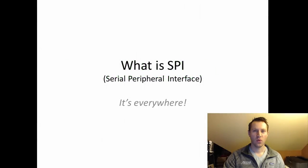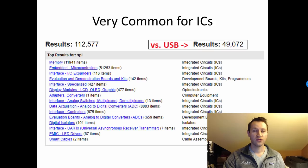Let's jump right in and talk about what is SPI. It stands for Serial Peripheral Interface, and it is everywhere. It's extremely common for ICs, or integrated circuits, meaning that a lot of dedicated chips that you might find on DigiKey on a circuit card interface via SPI.